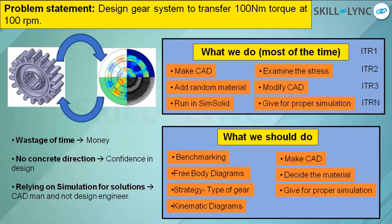After deciding the material, you have very good confidence — your free body diagram calculations are good, kinematic diagrams are correct, and you take a factor of safety of 1.2, which is an industry practice. There is always an error factor that comes into the picture — because of manufacturing error factors like tolerances, welding voids, and porosity standards — we always take a 1.2 factor of safety.